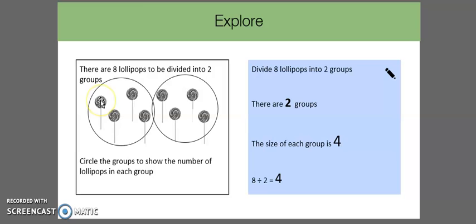Notice how in each group there are equal number of lollipops. So here we see there's 1, 2, 3, 4. Here there is 1, 2, 3, 4. Therefore each group has equal number of lollipops. Now we can fill out the rest of the information. We know that there are 2 groups. The size of each group is 4 and therefore 8 divided by 2 equals 4.